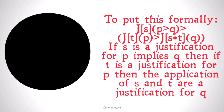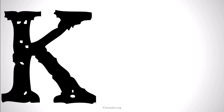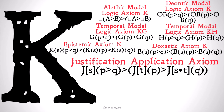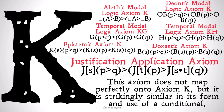If you've watched this whole series on modal logic, this axiom may look very familiar — it's going to be somewhat similar to axiom K. Basically, we have a quantified implication, which implies that the antecedent and the consequent of that implication are similarly but separately also quantified. The justification application axiom doesn't work quite like that because our S and T change, but it's strikingly similar in its form and use of a conditional. This axiom doesn't map perfectly onto axiom K, but it's going to be very similar in form.